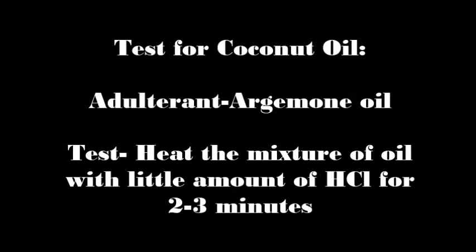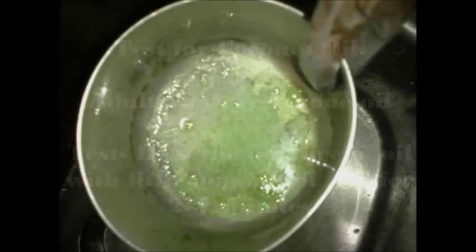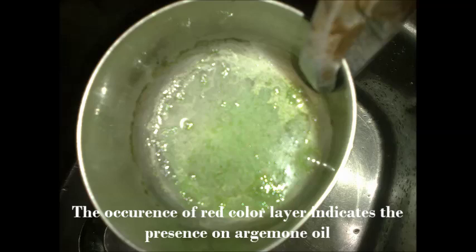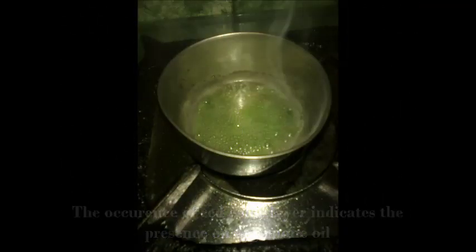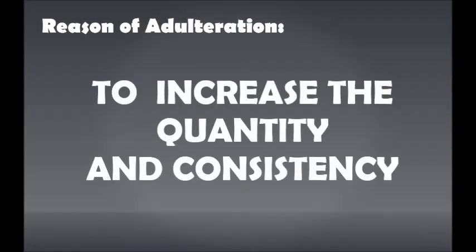Test for Coconut Oil — adulterant: argemone oil. Heat the mixture of oil with a little amount of HCl for 2–3 minutes. The occurrence of a red colour layer indicates the presence of argemone oil. Reason of adulteration: to increase the quantity and consistency.